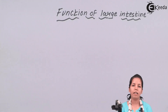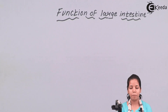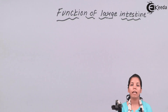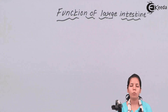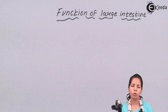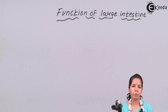Along with releasing undigested food material, the large intestine basically has mucosal cells — a white color secretion which is the intestinal mucosa present in the large intestine. This large intestine mucosa has goblet cells which secrete mucus in large quantities, helping to keep the intestinal juices secreted in a proper manner.